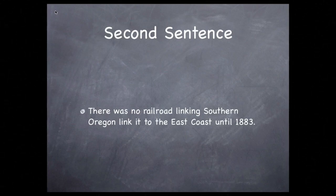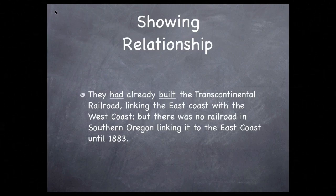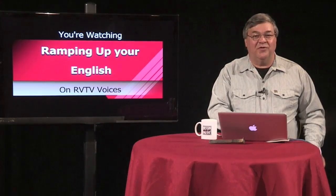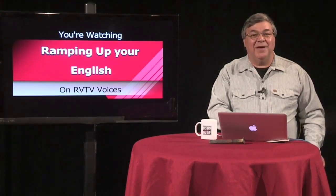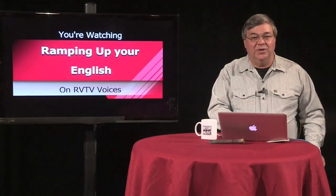Now let's look at the second half of what we're trying to say: there was no railroad in Southern Oregon linking it to the East Coast until 1883. Now let's put these two thoughts together to show the relationship between the two. They had already built the Transcontinental Railroad in 1869, linking the East Coast with the West Coast, but there was no railroad in Southern Oregon linking it to the East Coast until 1883. As an intermediate English learner, you probably already know about using the conjunction 'but' to join two phrases. However, without using the past perfect 'had built,' the sentence would not clearly communicate the relationship in time between the two events.